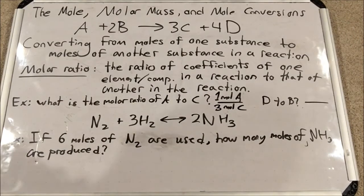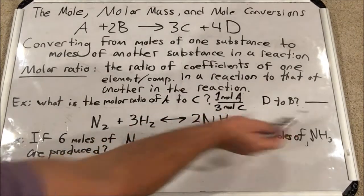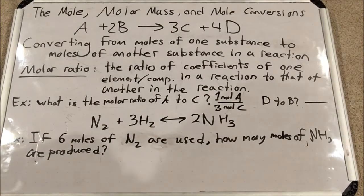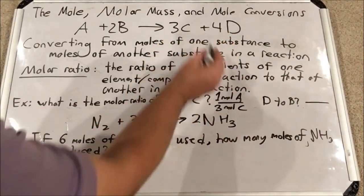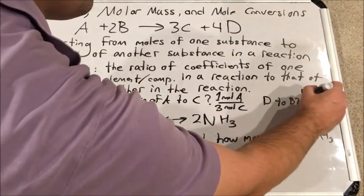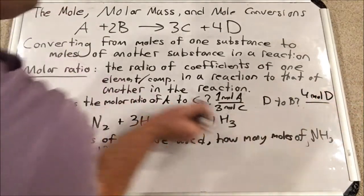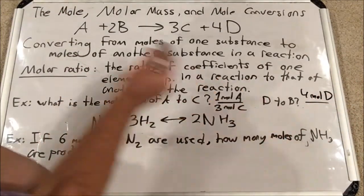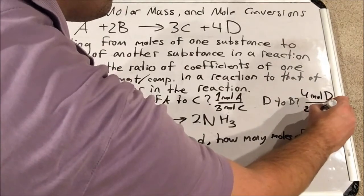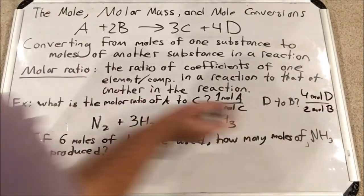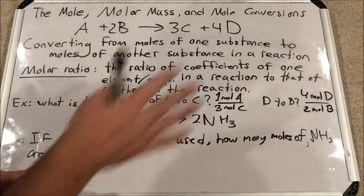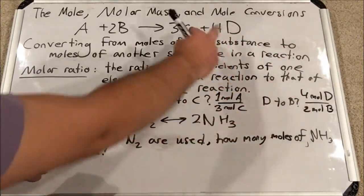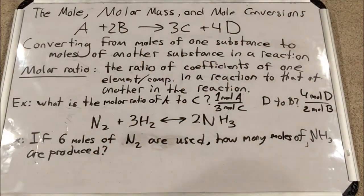If I'm asked for the molar ratio of D to B, I put four moles of D on top, divided by two moles of B. You're welcome to simplify fractions, but I'd steer clear of that so you really see the connection between these numbers in the ratio and the coefficients in the reaction.